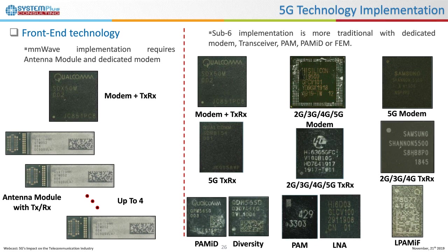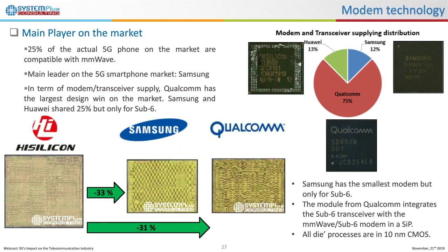For sub-6, since the architecture is similar to 4G, some manufacturers regroup the transceiving part for all communication protocols into one integrated circuit. Huawei is the only player yet to mix protocols at the modem level; Samsung and Qualcomm propose an additional modem for 5G. This can be seen in the silicon die sizes — Huawei has the largest die, integrating 2G, 3G, 4G, and 5G into one system-on-chip.